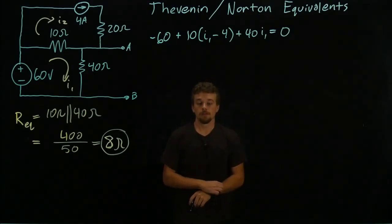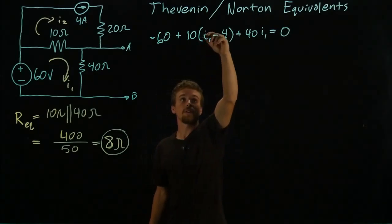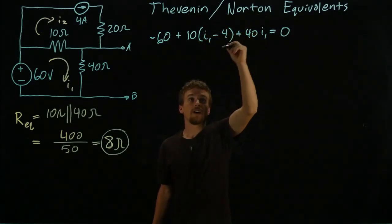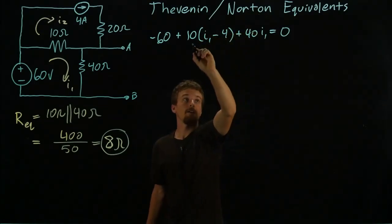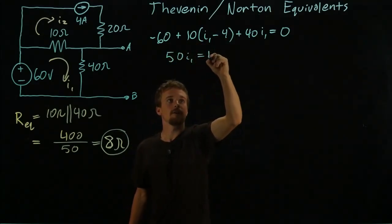Okay, so we'll do a little bit of algebra on this. This gives, if we distribute 10, we'll have 50 I_1 total. So this goes down to 50 I_1 is equal to 100.